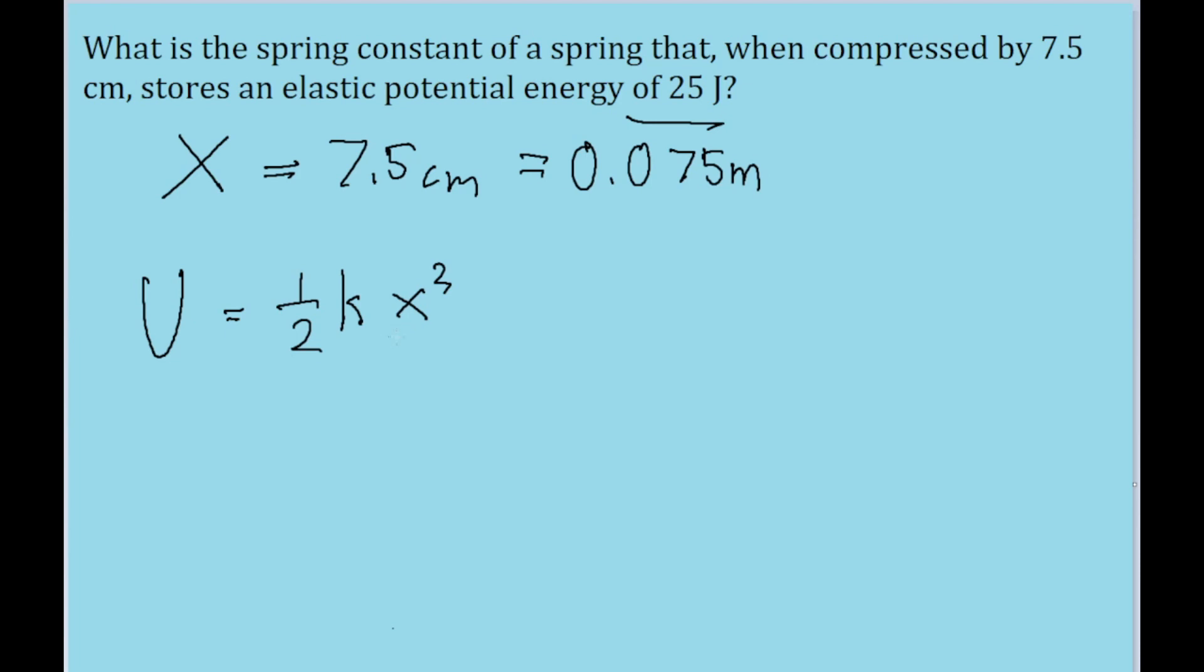So all we have to do for this problem is solve this equation for k. First I'm going to multiply both sides of the equation by 2 to get rid of this, and then divide both sides of the equation by x squared to get k on its own. And the formula we find states that k is equal to 2U divided by x squared.